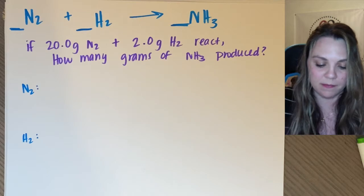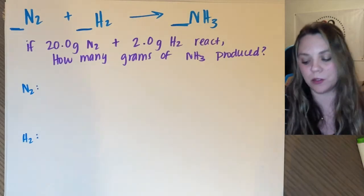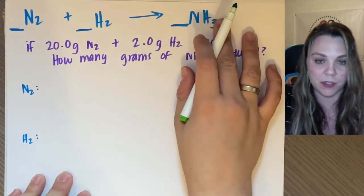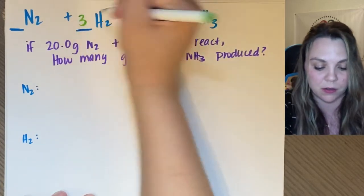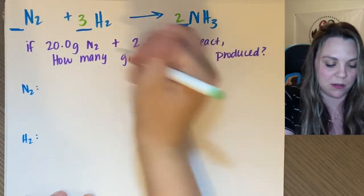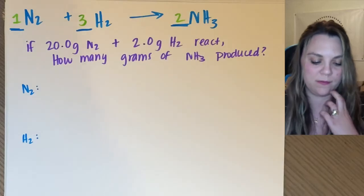And then I just do it like any other stoic problem. So I balance my reaction first. I always balance my reaction. So three of these for two of these, one of those.